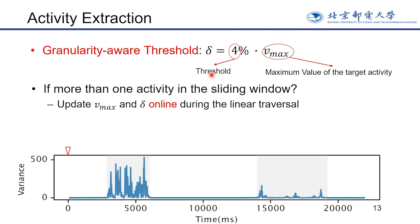For offline CSI stream preprocessing, it is easy to ensure only one activity exists in a sliding window or obtain the approximate location of a target activity, so the threshold can be easily decided. But for online processing, the number of activities in the window is unpredictable. So we introduce a new idea: updating the maximum value and threshold online during the linear traversal. When the curve moves rightward, if the current variance value is greater than the previous values, we get a new maximum value and a corresponding new threshold. We can see the maximum value of this activity is obtained and the threshold will not update further in this segmentation.